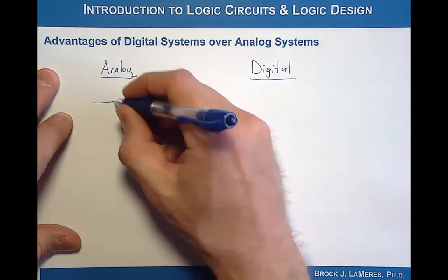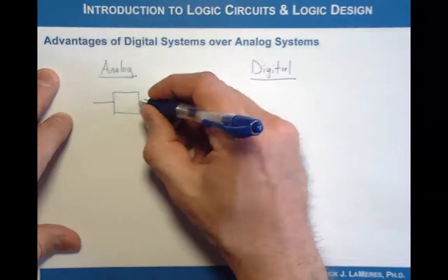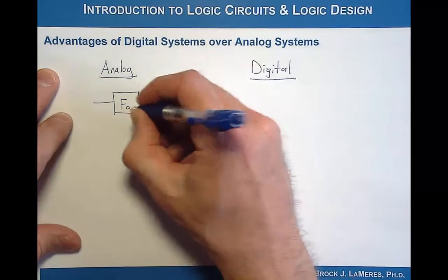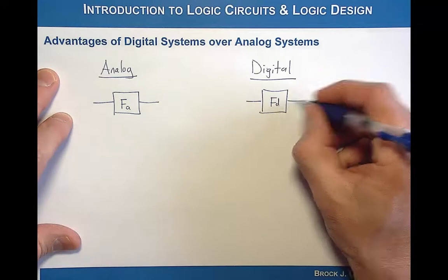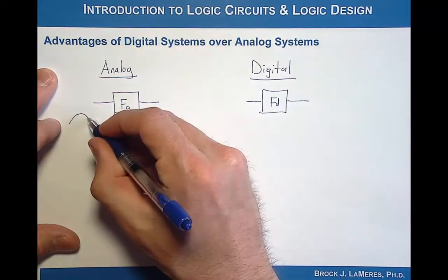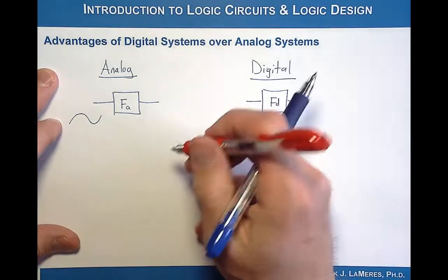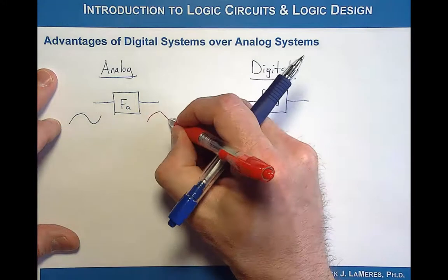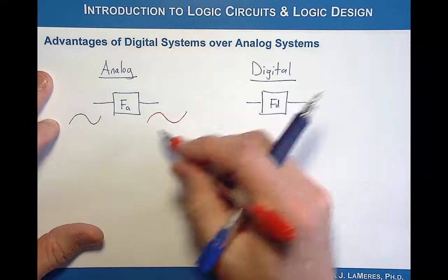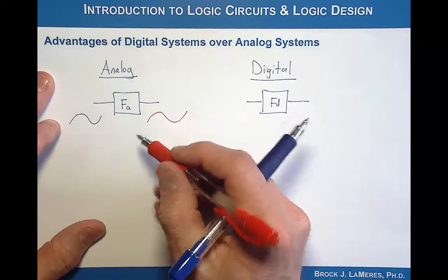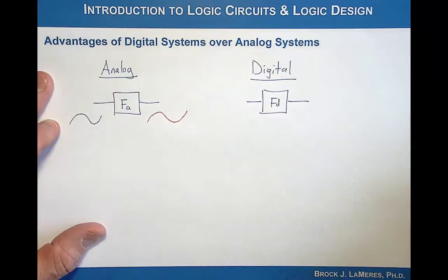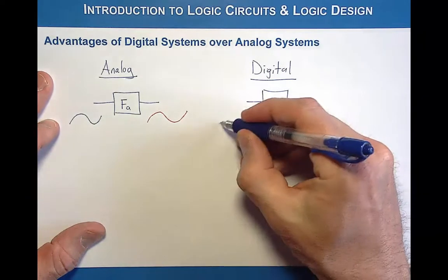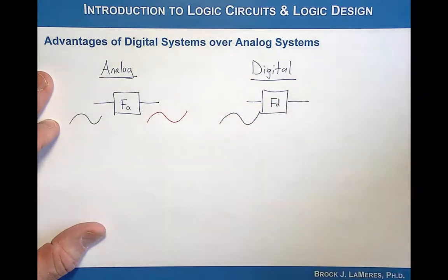In an analog system, the output being produced is a direct mapping to the input — it's continuous and time-bearing, meaning the analog system is always on, always producing an output that's a direct mapping to the input. In a digital system, on the other hand, you have a discrete representation of the information.